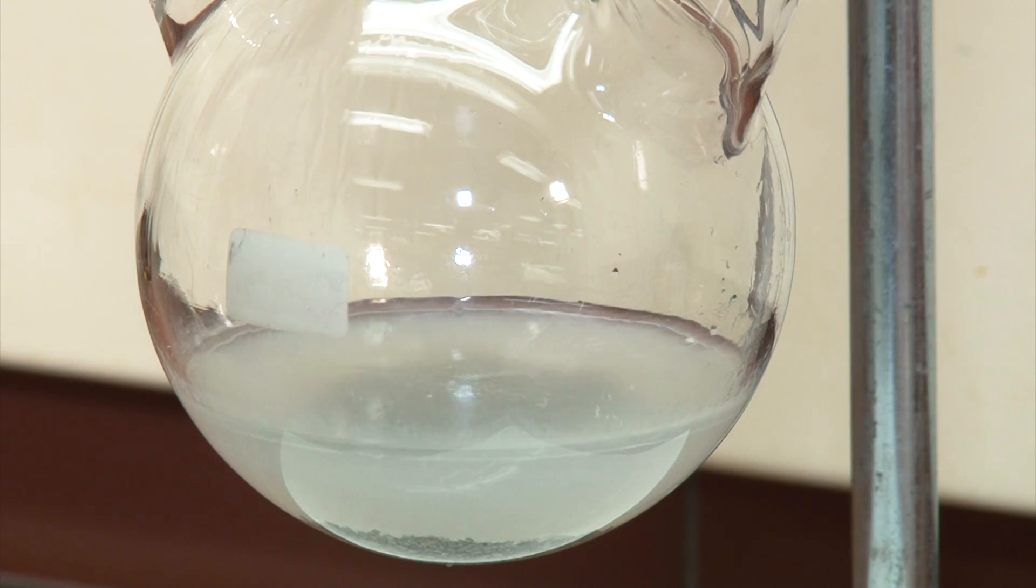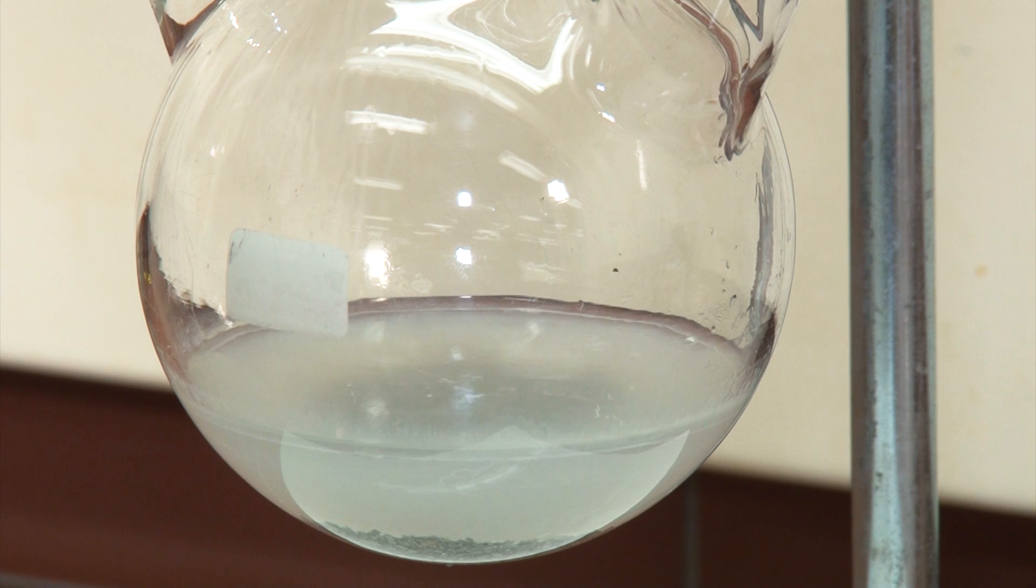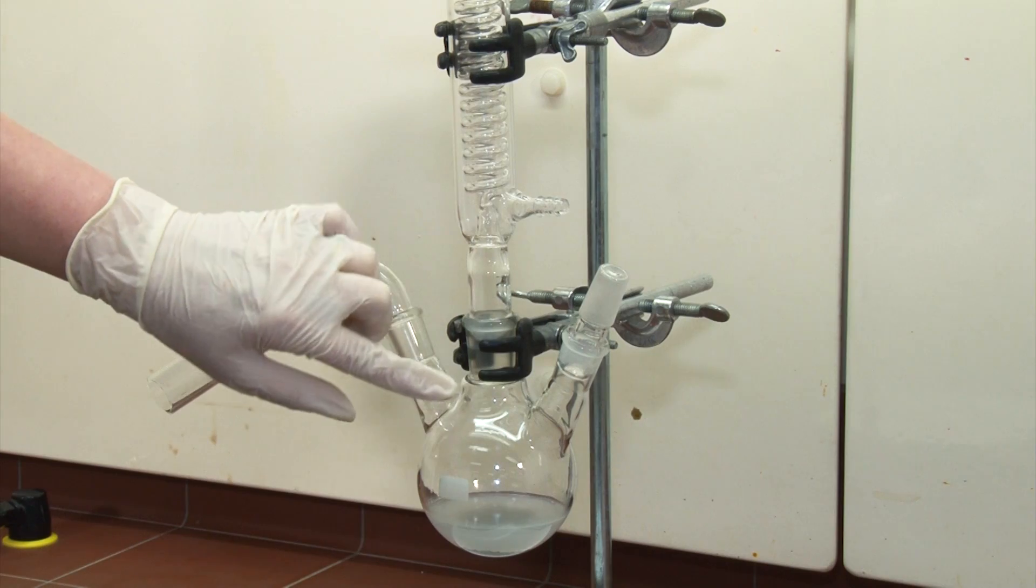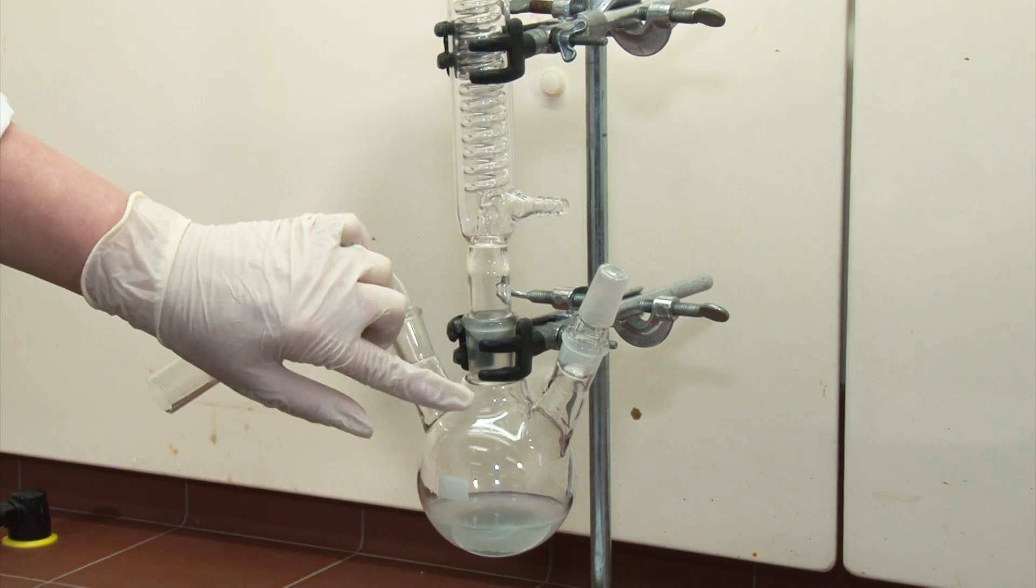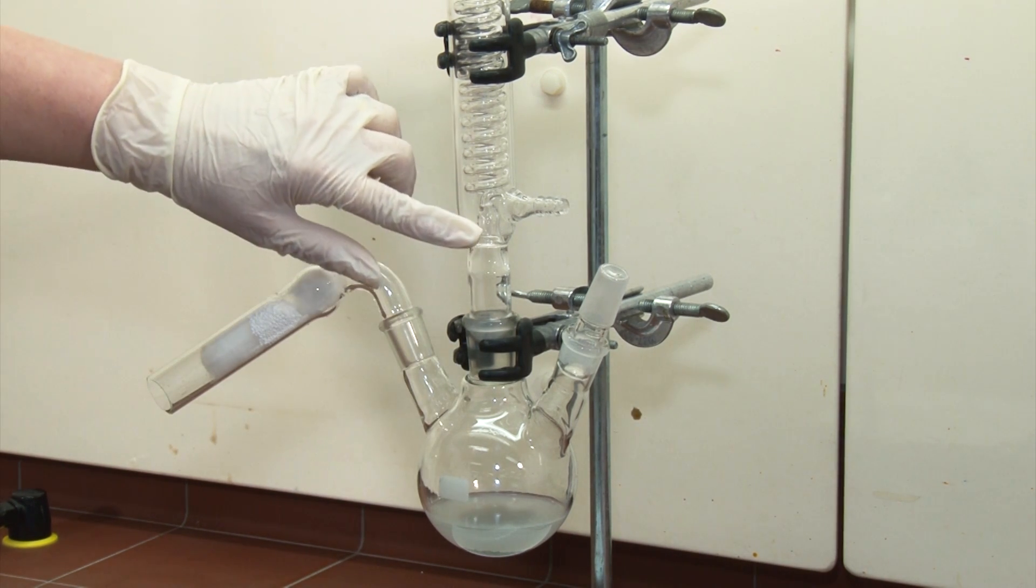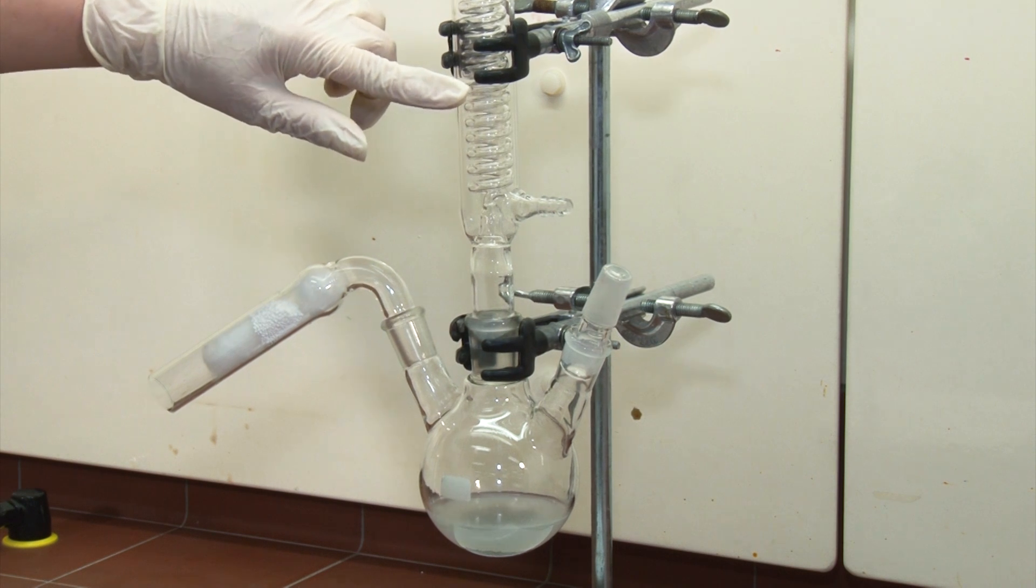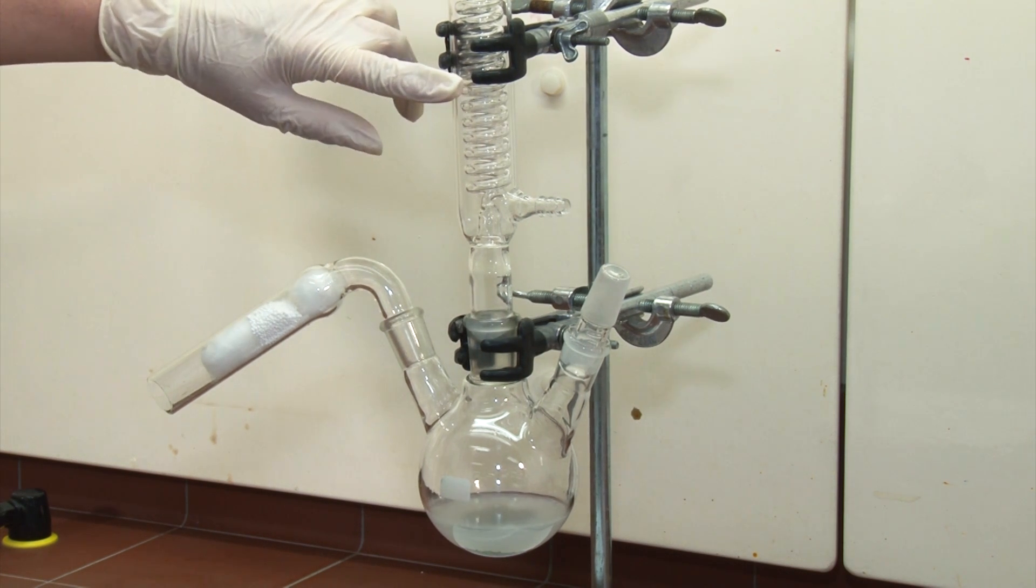You can see it's boiling quite vigorously now. We want it to keep boiling under reflux for about 15 minutes. You can see the ether's evaporating and then hitting the side of the flask and condensing back down again. That condensation shouldn't go past about halfway up the condenser or you'll be losing some of the ether.